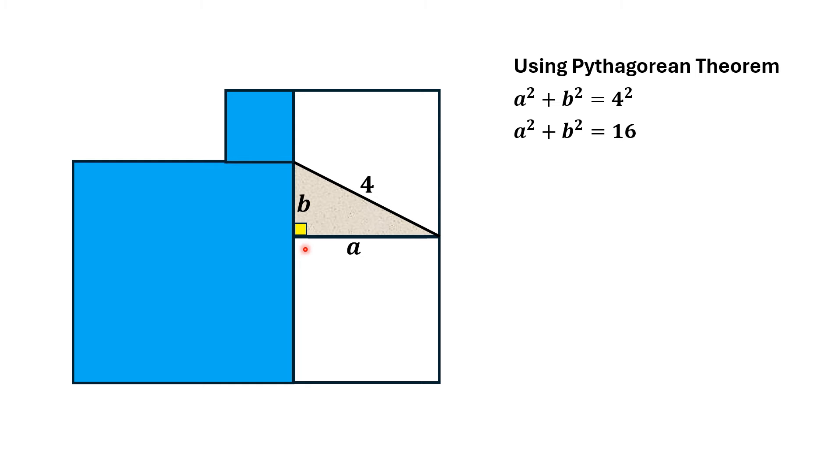Now, since this length is A, all these lengths, side lengths of the square, are A. And similarly, these side lengths of the square are also A. Now, let us call the area of this larger square as A and this smaller square as B.